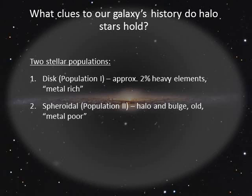Astronomers divide the Milky Way into two stellar populations: the disk population and the spheroidal population. The disk contains both young and old stars, and all the stars in the disk contain a greater concentration of heavier elements. Astronomers say these stars are metal-rich, even though we're talking about elements that aren't necessarily metals.